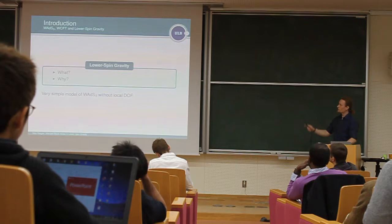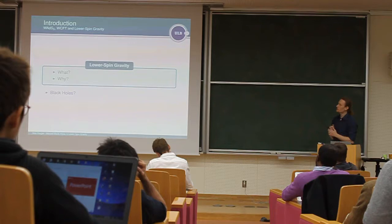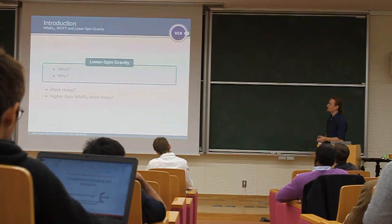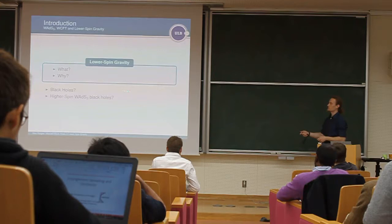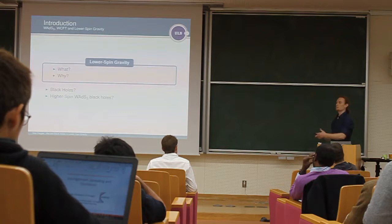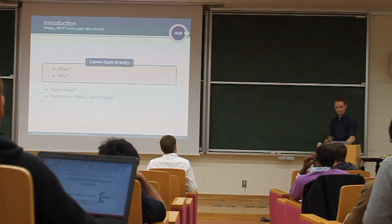However, what was still missing was the question, okay, in this setup of lower-spin gravity, can you also describe black holes? And if yes, how to do that? And some personal intriguing question that I was asking myself is, if this is okay, if that works with the black hole description, then it's very, very tempting to try to construct something like high-spin Warped AdS black holes. Because once you have a Chern-Simons theory with a given gauge algebra, it's usually very simple to extend this very forwardly to a high-spin setup.